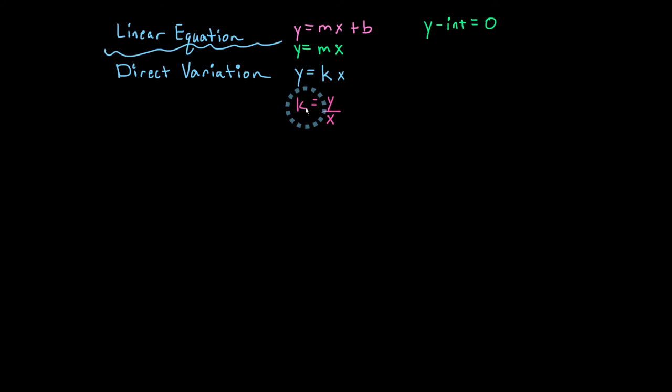And that constant, we're actually going to call it k. So k here, it's your constant, and it's actually known as your constant of proportionality. Or you might hear somebody call it constant of variation. It's the same thing, constant of proportionality.